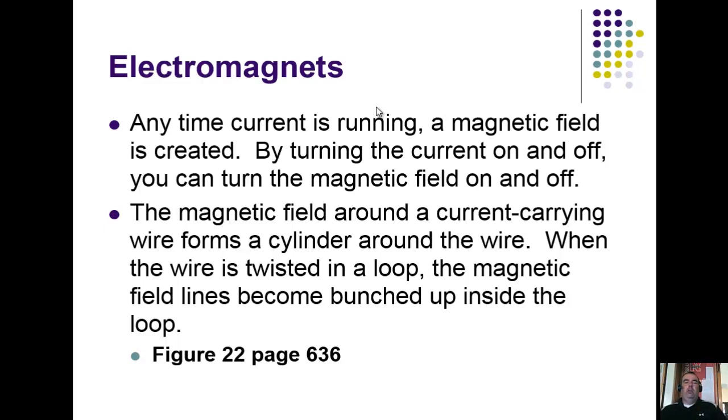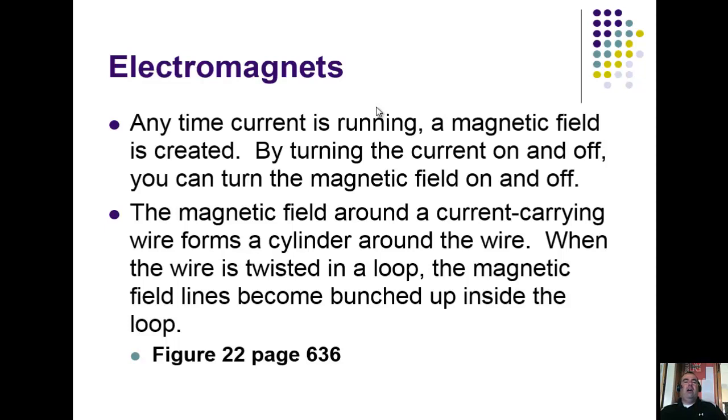Figure 22 on page 636 shows that to you. I've done that in this slide right here. Don't worry about the equation. Notice instead of current flowing straight through a wire, this wire is coiled. Look specifically within—look how bunched up those lines are. The closer those lines are, the stronger the magnetic field that's going to be created because those particles are closer together.